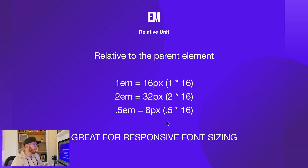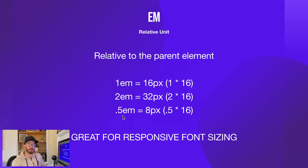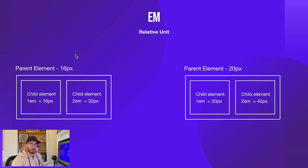Moving on to ems — ems are slightly different. They are a relative unit; remember pixels were an absolute unit. Ems are relative, meaning they change. So if our parent element's font size is set at 16 pixels, that means 1em is 16 pixels. 2em would then be 2 times 16, so the equivalent of 32 pixels. If you had half an em it would be 8 pixels. I need to stress that this only applies to the parent element, which makes it great for responsive sizing. For example, if your desktop body font is 18 pixels, you might set mobile to 16 pixels and all typography using ems will change accordingly, making it really nice and easy for responsive design.